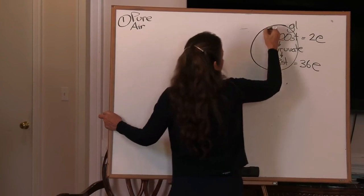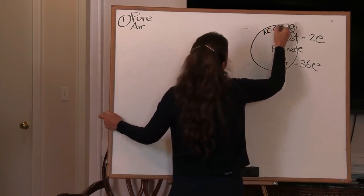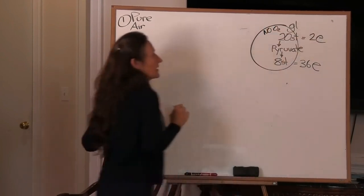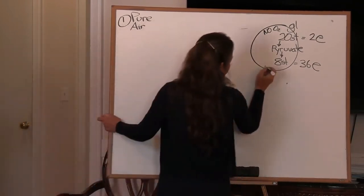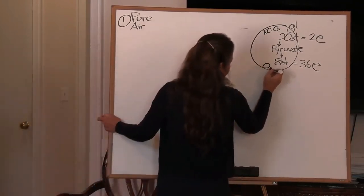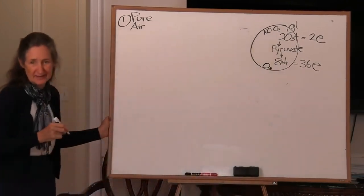And as we looked at yesterday, this pathway, no oxygen. So it produces energy by the process of fermentation. Whereas the eight-step pathway, it uses oxygen. What a difference oxygen makes.